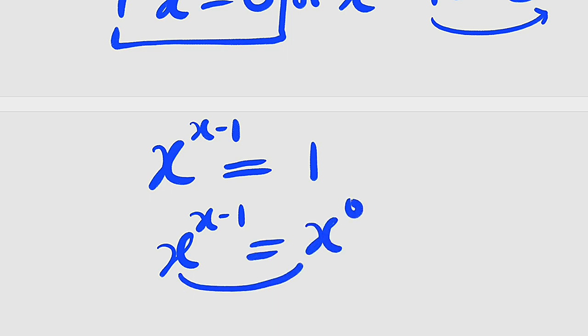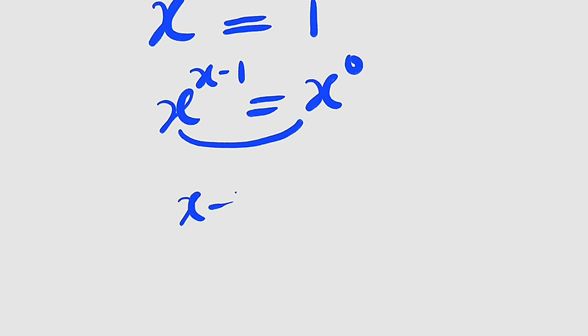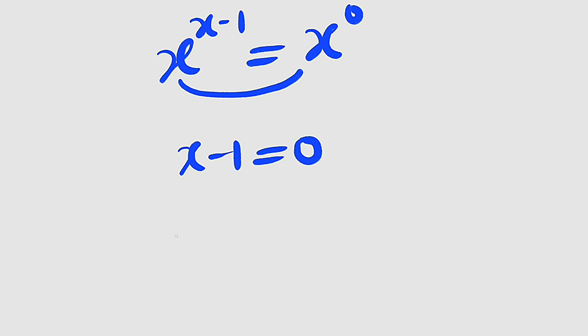Because the bases are the same, we can equate the exponents. x minus 1 equal to 0. If you take negative 1 to the right, you have x equal to 1. And you have already seen that x can also be equal to 0.